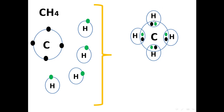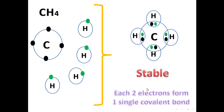Hydrogen has only one electron, and we know the capacity of the first shell of any atom is two electrons. So each hydrogen here has two electrons, making this compound stable and everybody happy. Each two electrons form one bond, so here we have four single covalent bonds.